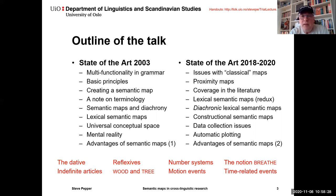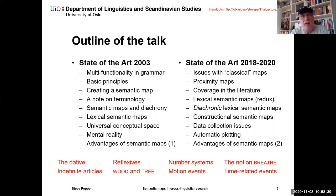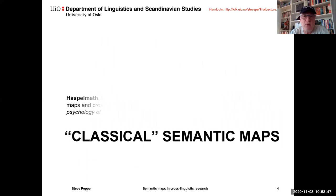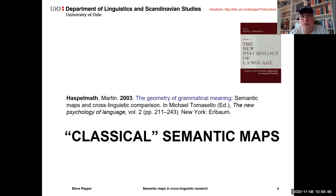Throughout the lecture I'll be talking about examples of semantic maps covering domains like the dative, indefinite articles, reflexives, words that mean wood and tree, number systems, motion events, the notion to breathe, and time-related events. So let's start with classical semantic maps as of 2003.